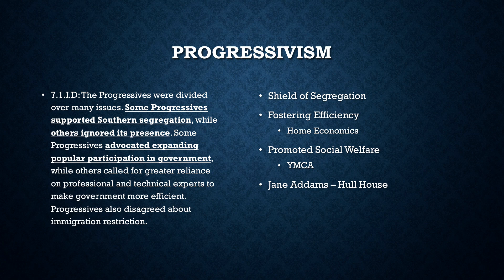They fostered things like efficiency. Home economics — what they wanted to do was create a very efficient home for the wife so she could get chores done quicker and have free time: perhaps take night school, get a college education, or get a part-time job. They promoted social welfare — one of the things we still have is the YMCA. Jane Addams, mentioned in period 6, should also be here in period 7: Hull House and those settlement homes are a very big part of progressivism.